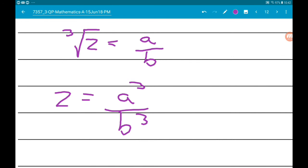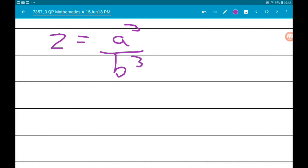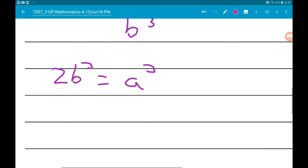If we multiply through by b cubed, we get 2b cubed equals a cubed. That means that a cubed is even, which means that a is even.